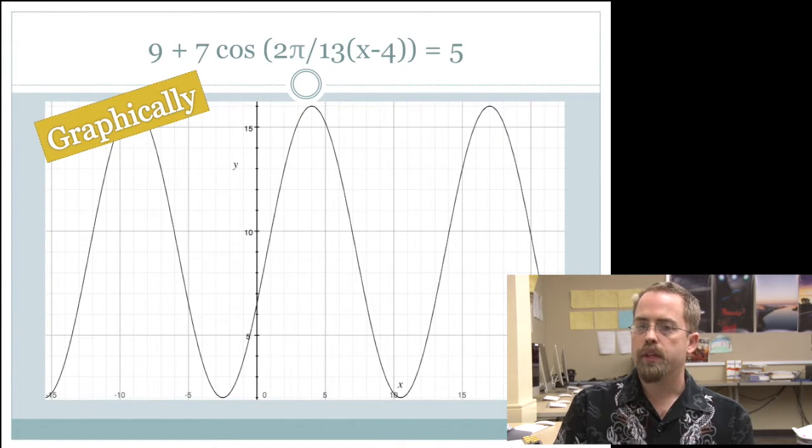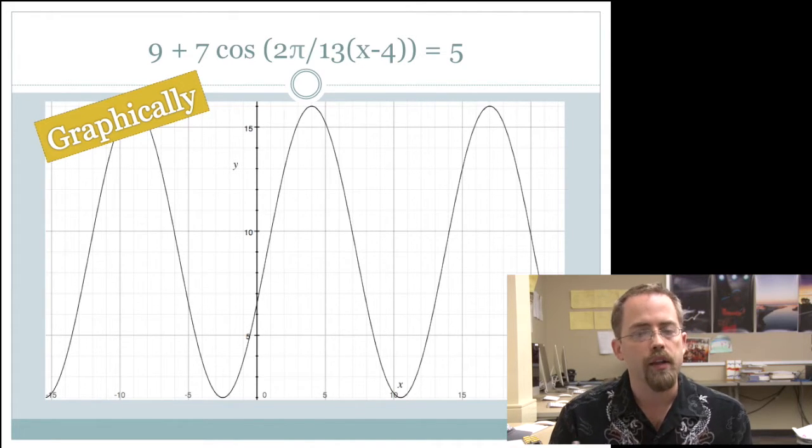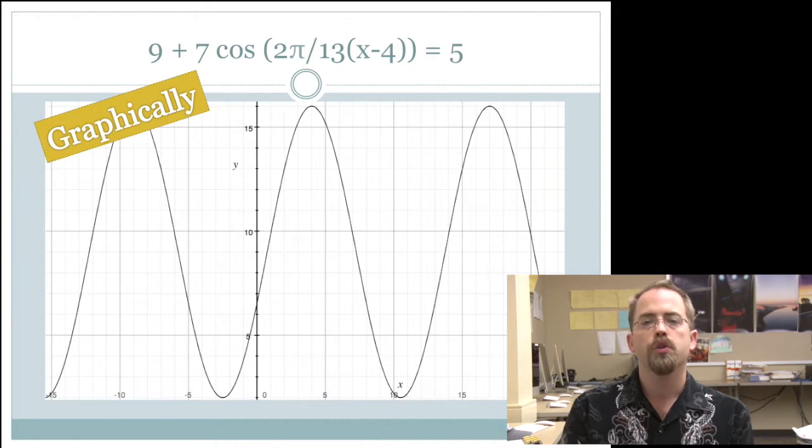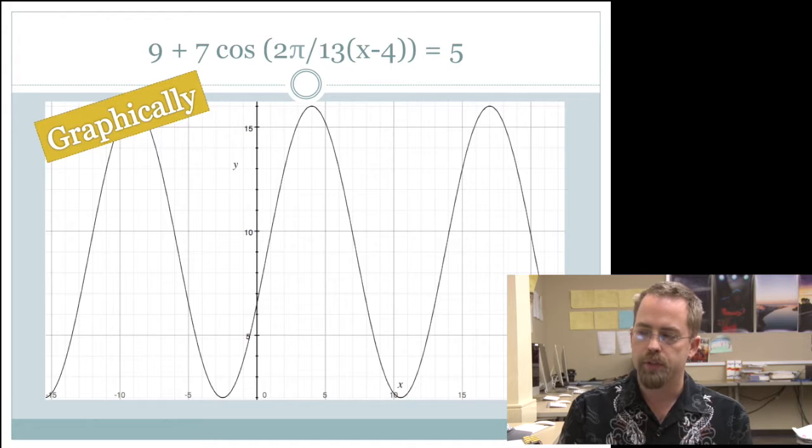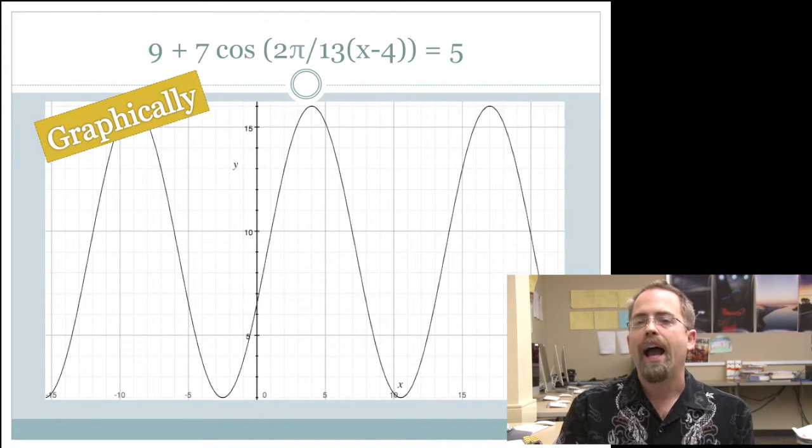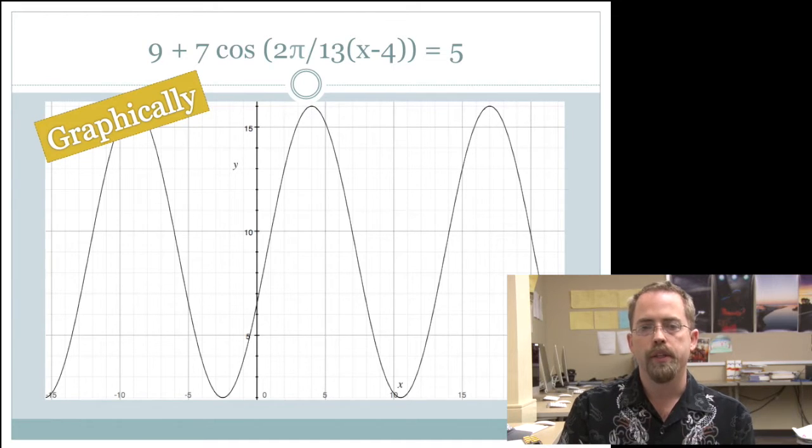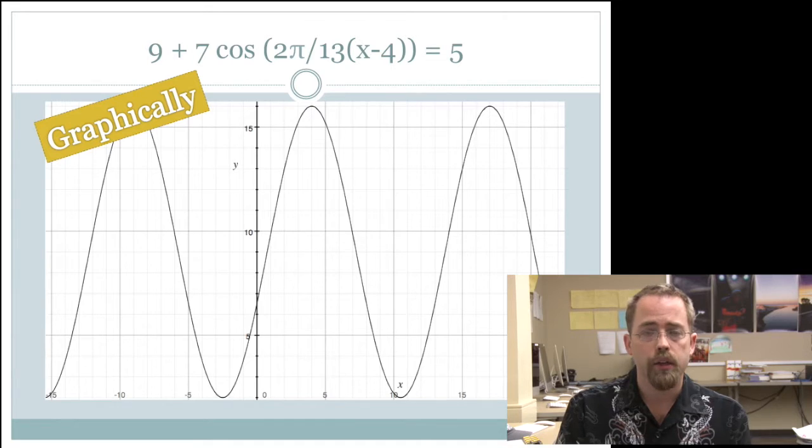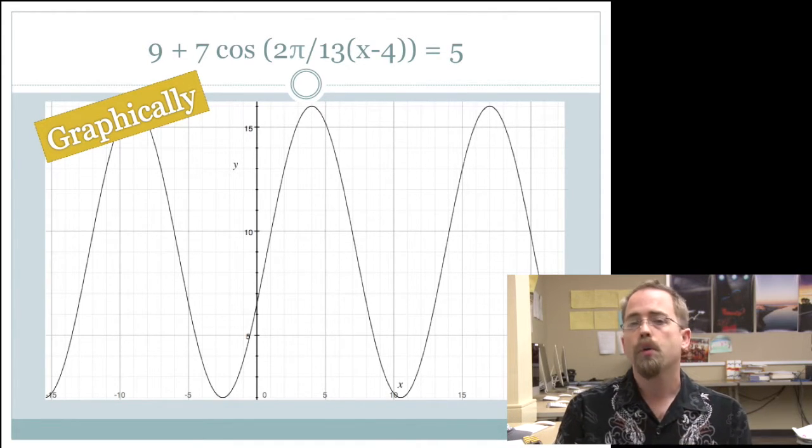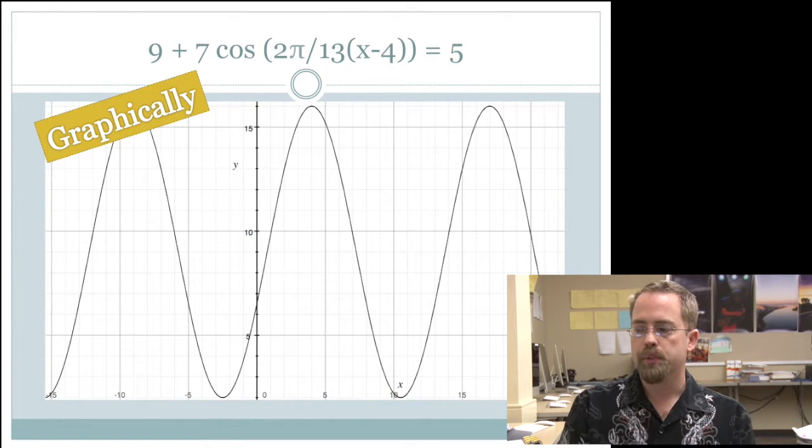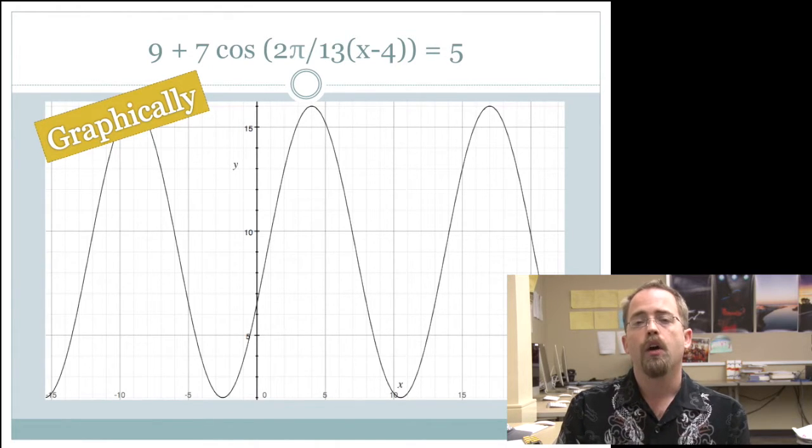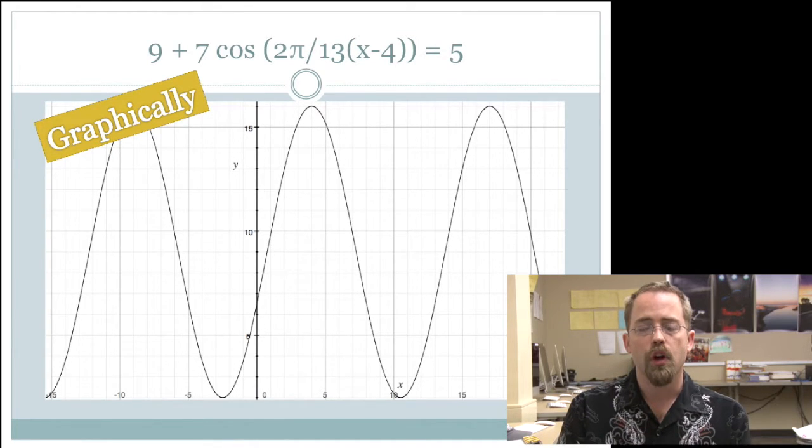So here comes one that's a lot more difficult and of the kind that we need to work up to in section 3-6. What if we have this insane cosine function: 9 + 7 cos(2π/13(x-4))? Where are all the places where this intersects with the line y = 5? So a very reasonable sensible answer is to get out your calculator, put in the line y = 5, put in the line y = 9 + 7 cos(2π/13(x-4)) and just do intersect.